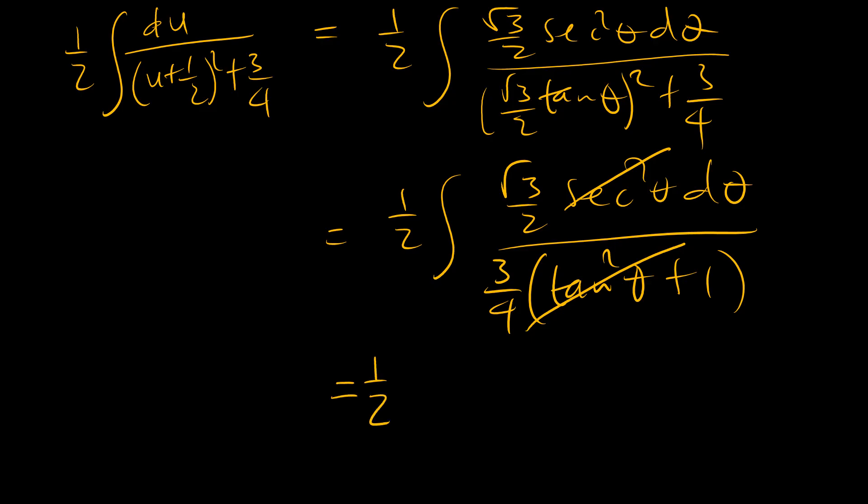And so, we now have a half, root 3 over 2, 4 over 3, and integral of 1. So, this and this and this cancels that. So, we are left with root 3 over 3, the integral of 1, which is the same as 1 over root 3.